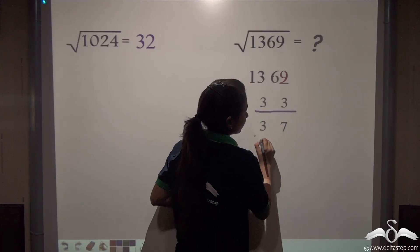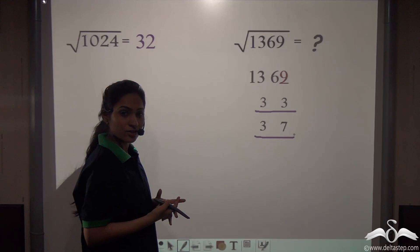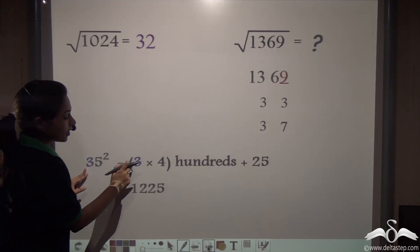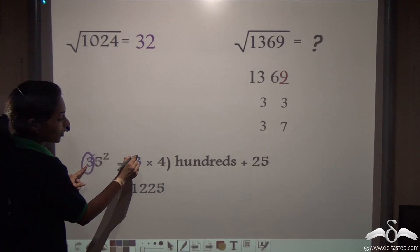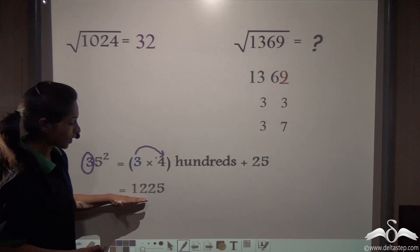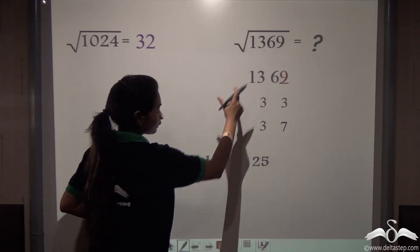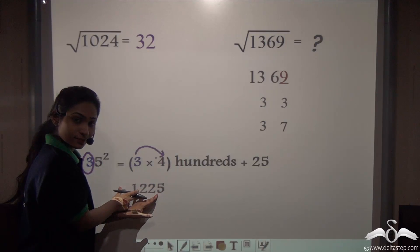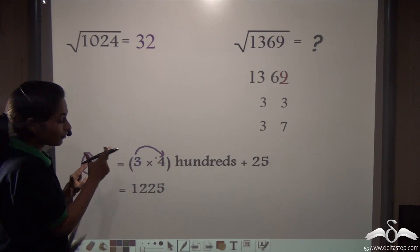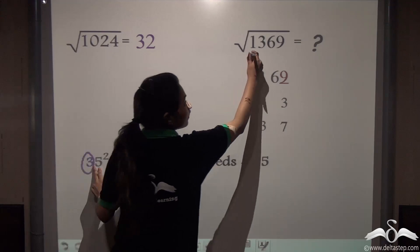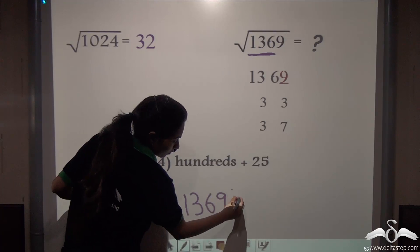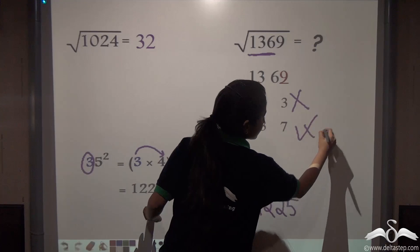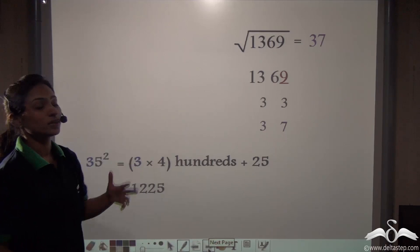Now which answer is correct — 33 or 37? Again, 35² will come to our rescue. Find out 35² using that simple method. Again 35² = 3 × 4 into 100 plus 25 = 1225. Now compare: if 35² is 1225, then 33² has to be less than this because 33 is less than 35. But we have a number greater than 1225, so this option is not valid. We are left with 37. So 37 is the square root of 1369.